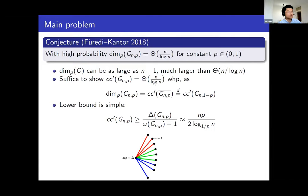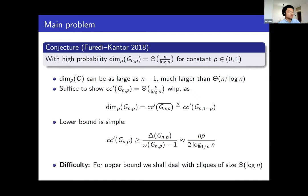That is the lower bound. The difficult part is to prove the upper bound. The upper bound requires finding a clique edge coloring that can be colored by that many colors. This type of bound means we really need to deal with cliques of very large size — roughly log n. This is the main difficulty, because dealing with cliques of constant size would be easier.